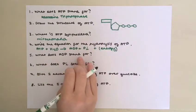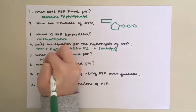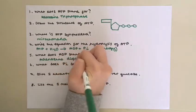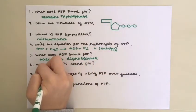What does ADP stand for? Adenosine diphosphate. What does PI stand for? Inorganic phosphate.